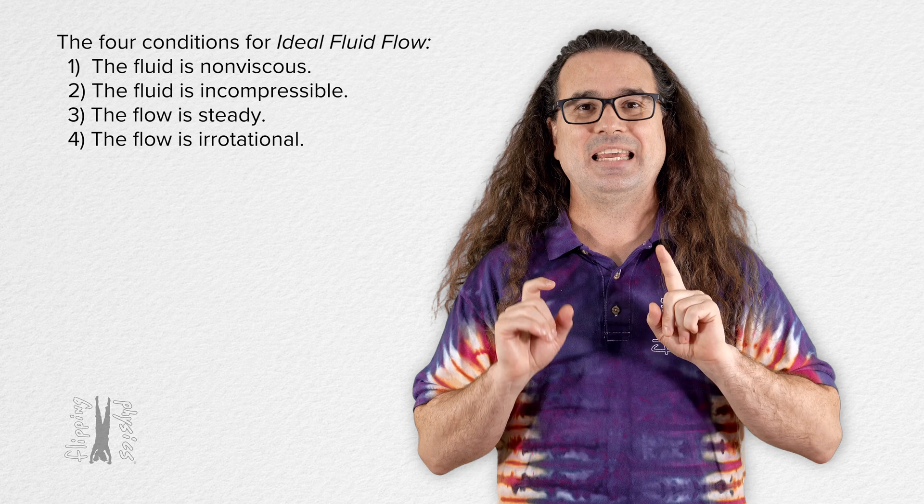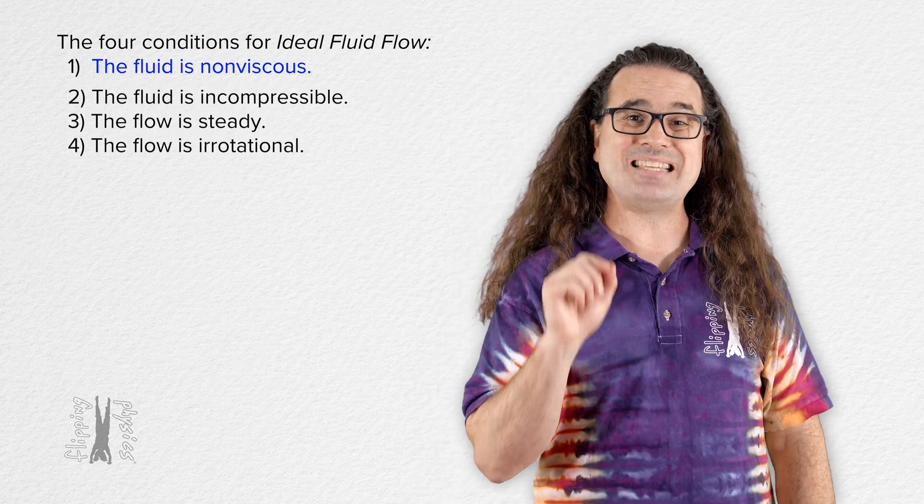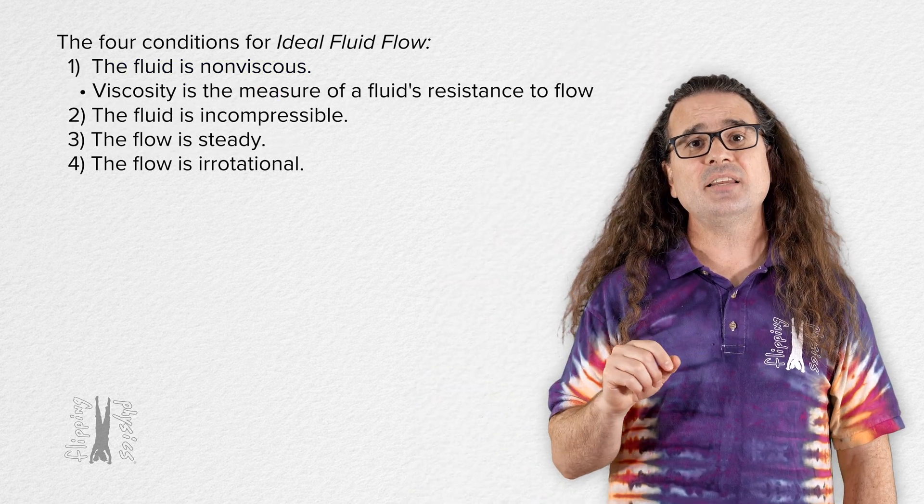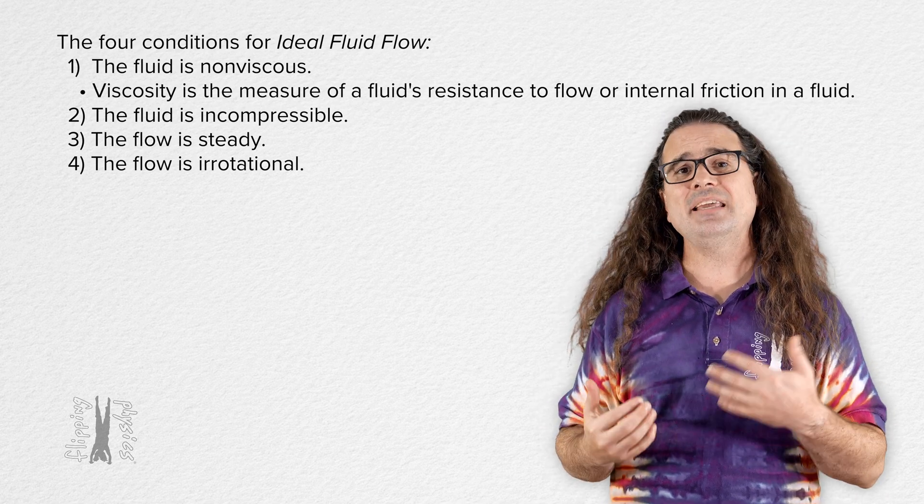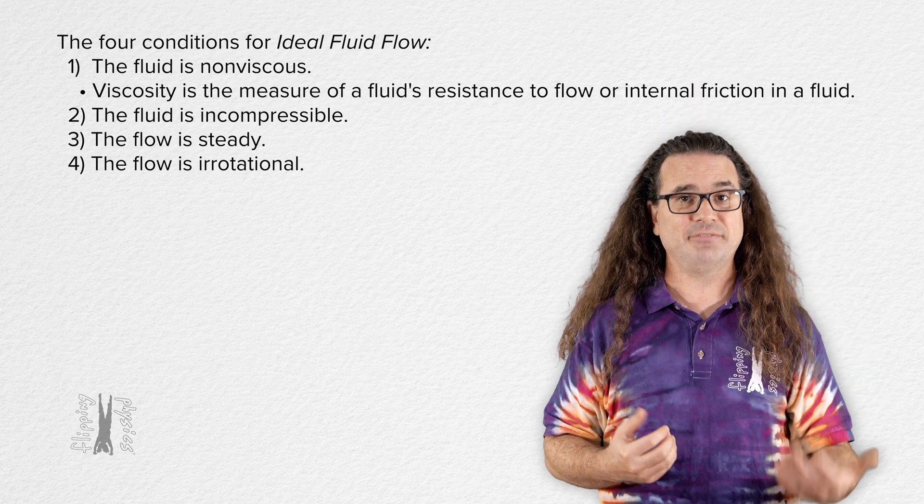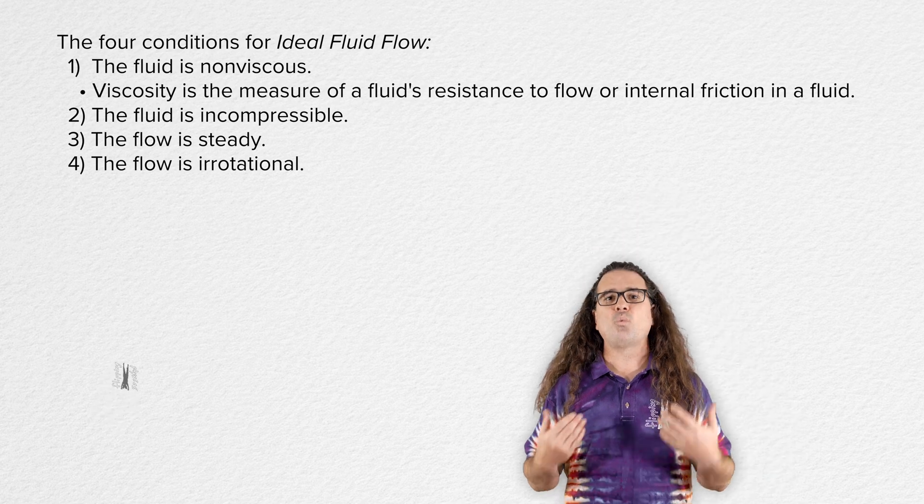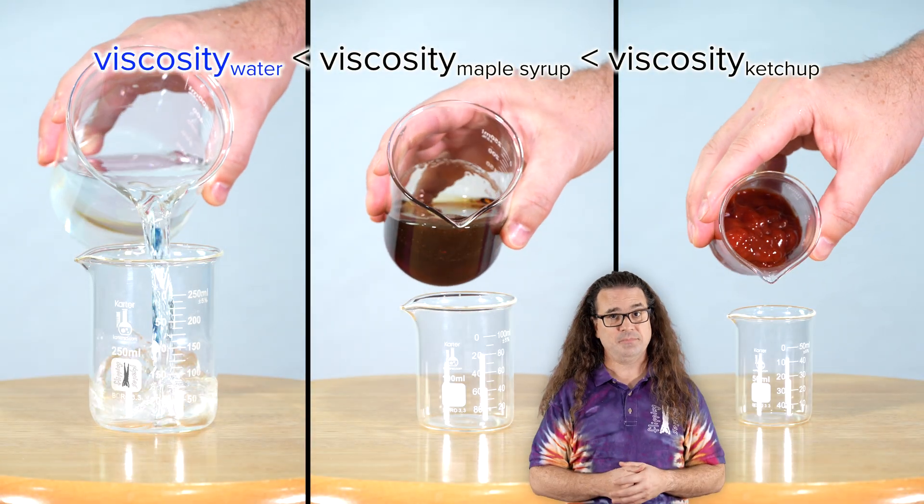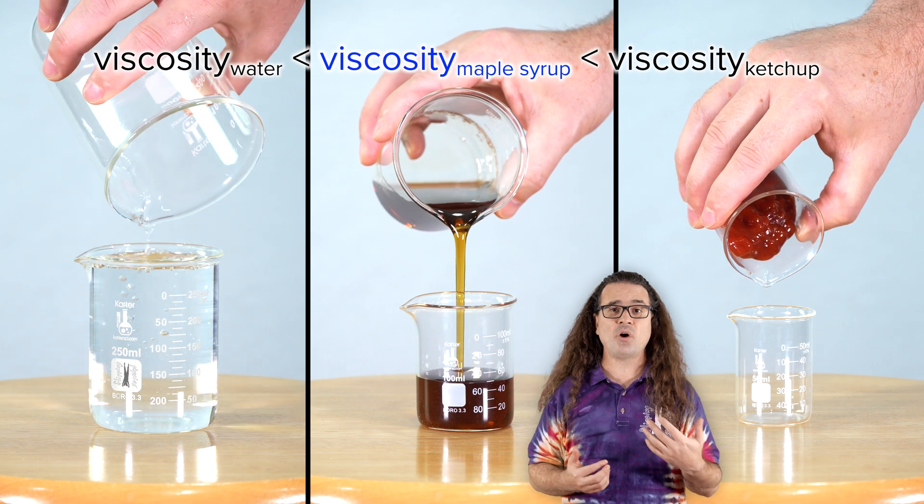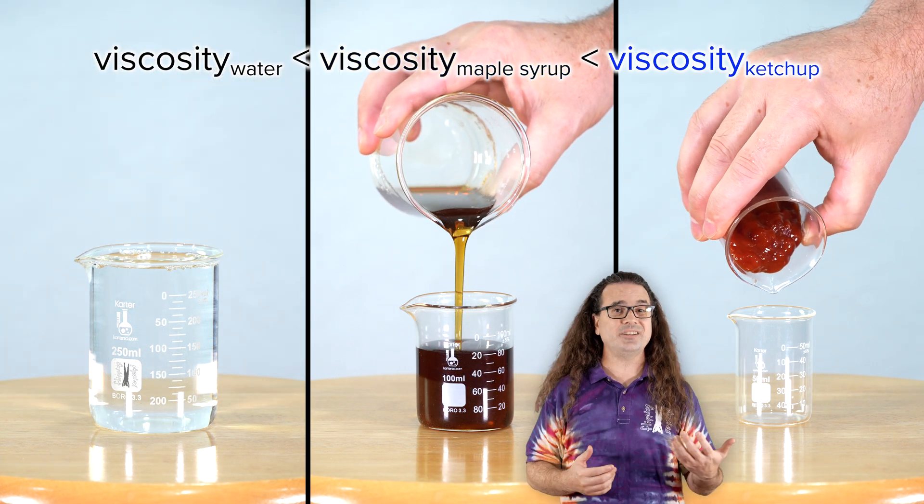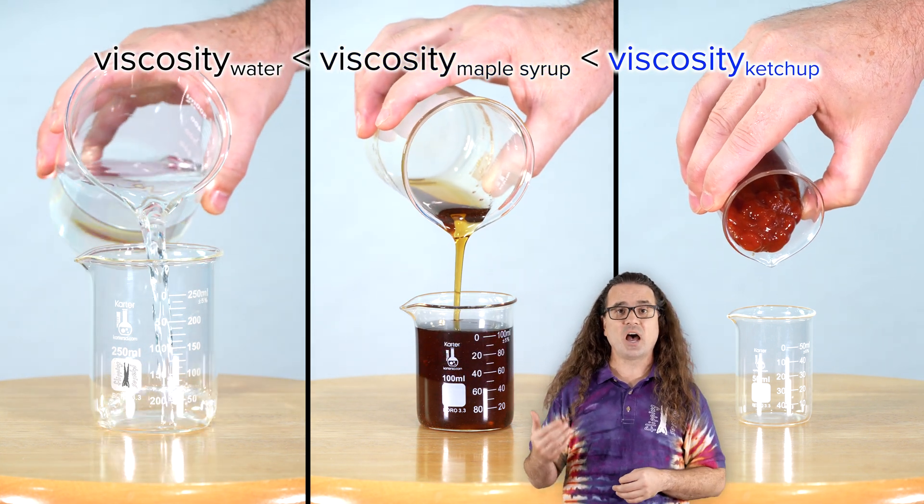First, in ideal fluid flow, the fluid is non-viscous. Viscosity is the measure of a fluid's resistance to flow or a measure of the internal friction in a fluid. For example, water has a low viscosity, maple syrup has a viscosity which is higher than the viscosity of water, and the viscosity of ketchup is higher than the viscosity of maple syrup.